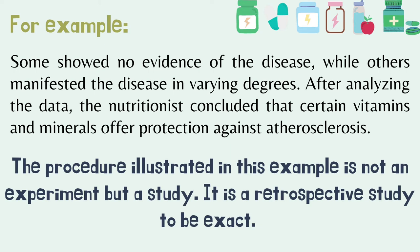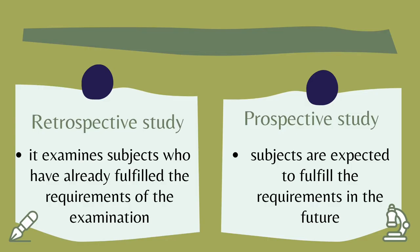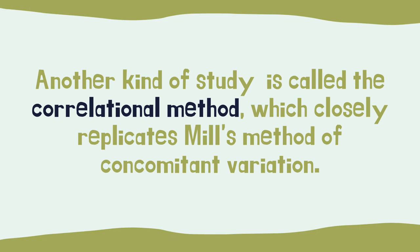It is a retrospective study, to be exact. A retrospective study examines subjects who have already fulfilled the requirements of the examination. A prospective study expects subjects to fulfill the requirements in the future. Another kind of study is called the correlational method, which closely replicates Mill's method of concomitant variation.